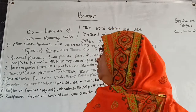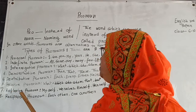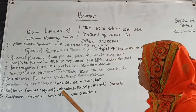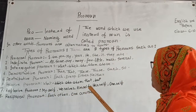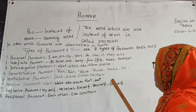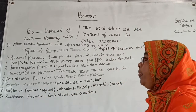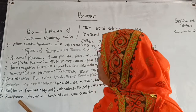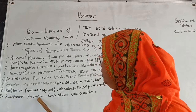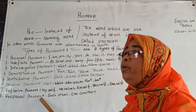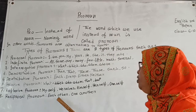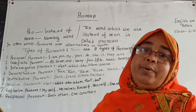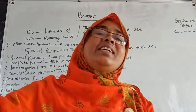Number seven — reflexive pronoun: myself, himself, herself. Number eight — reciprocal pronoun: each other, one another.